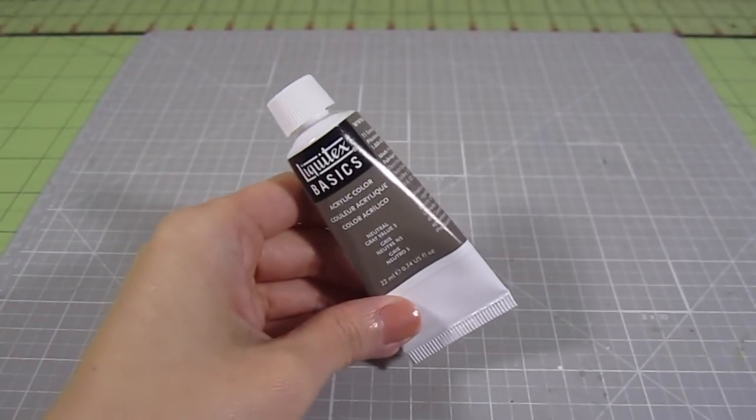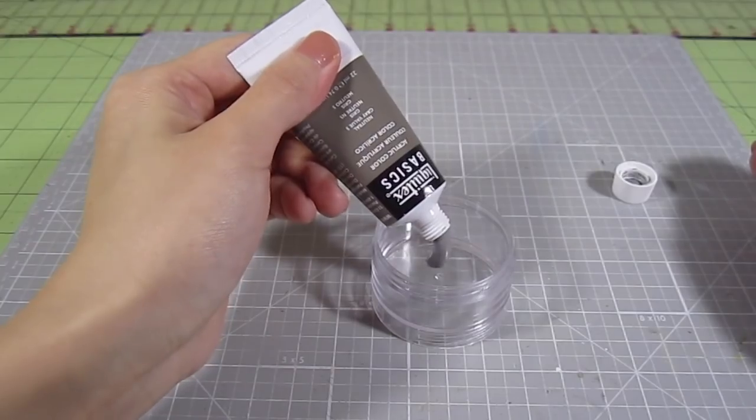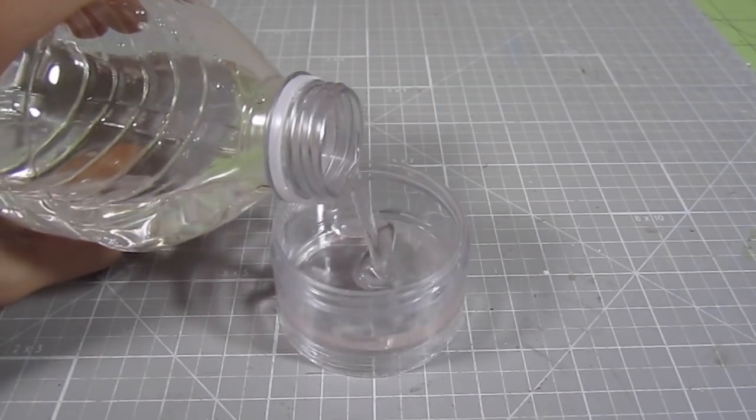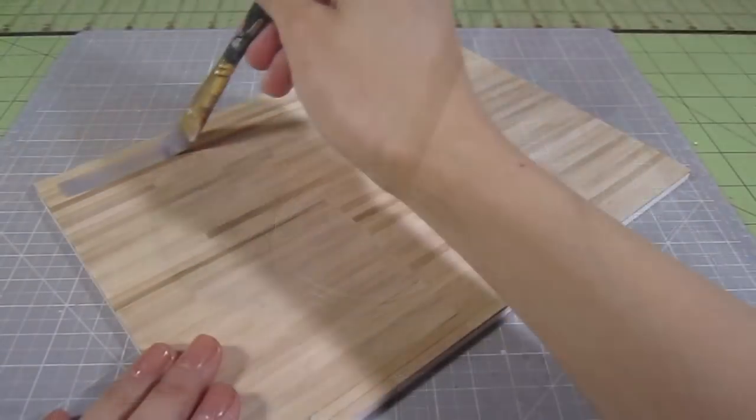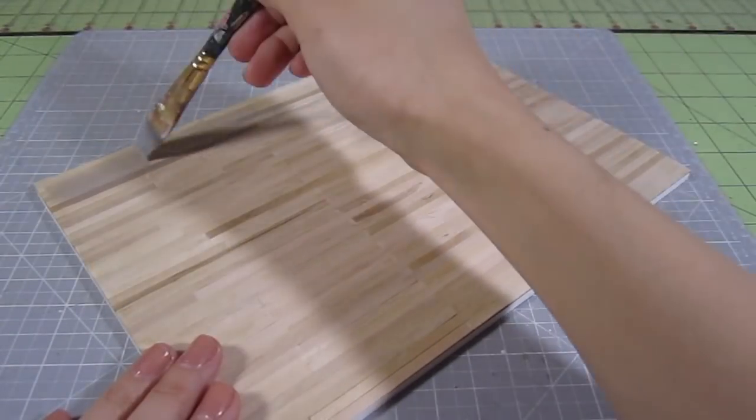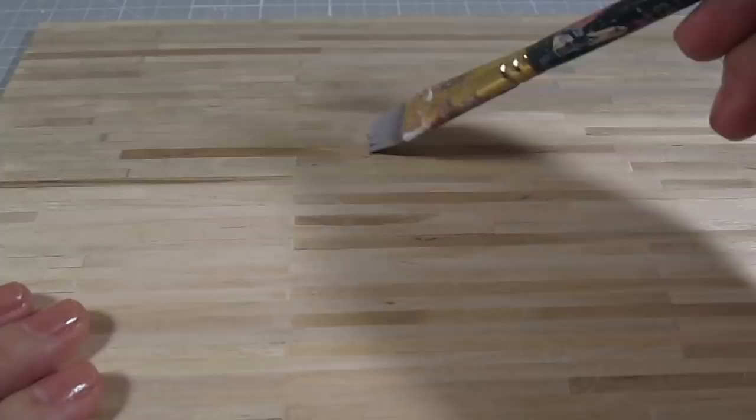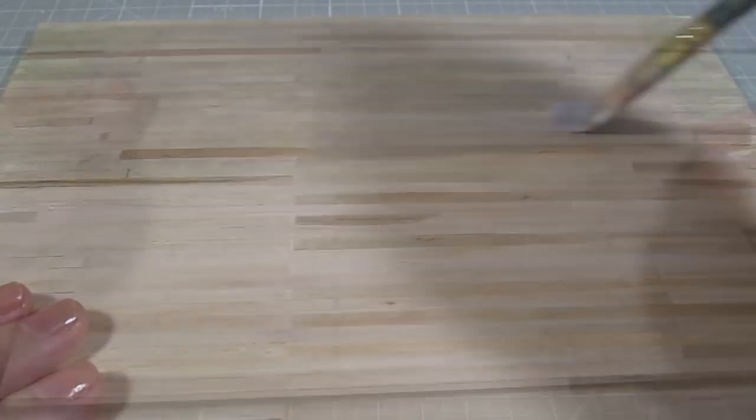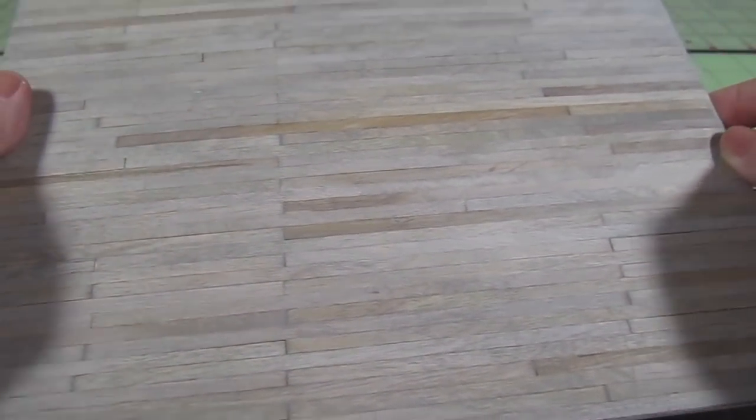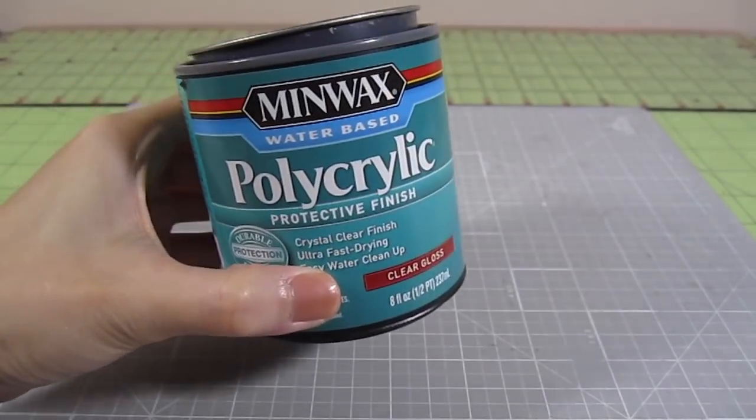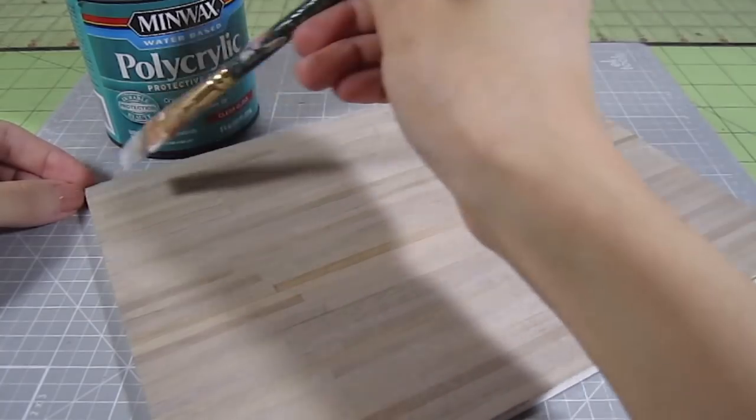For a modern look, I'm creating a gray stain with neutral gray acrylic paint. Mix that with some water and you have a very simple stain. Brush it onto the wood in thin layers until you achieve the color that you like. I did about three coats to get this color. Then for some gloss and protection, I added on a few coats of poly acrylic varnish.